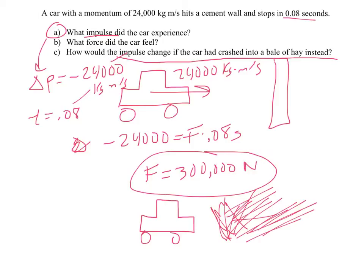But what might be different is it might take longer to stop. Maybe it takes a full second to stop, in which case, negative 24,000 equals f times 1. The force you're experiencing is 24,000, much better than 300,000. So your impulse is the same, your change in momentum.